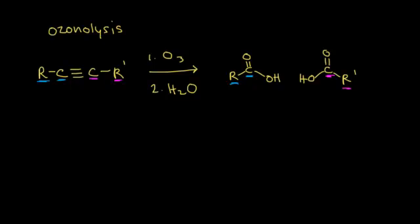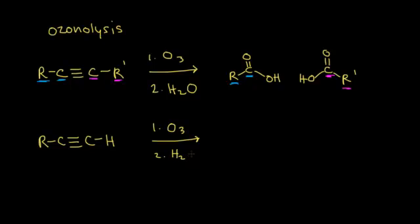Now let's look at ozonolysis of terminal alkynes, where the triple bond is on the end of the molecule — making this a hydrogen on the right. We add ozone in the first step and water in the second step. The left side gives us the same product as before: that carbon with its R group gives us a carboxylic acid. That portion of the molecule gives the same product as the internal alkyne case.